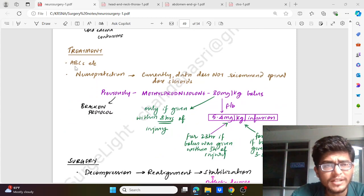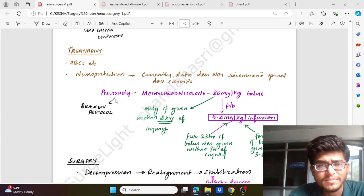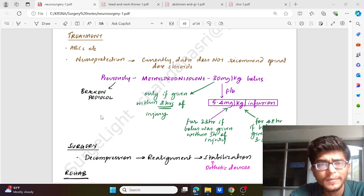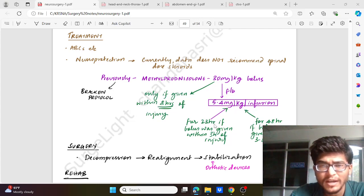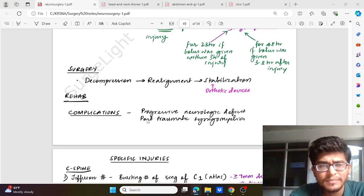Now coming to the treatment: initially we will take care of the airway, breathing, and circulation. Then we will go for neuroprotection, which is generally not recommended nowadays. Previously it was used as per Bracken's protocol where we use methylprednisolone of around 30 mg per kg, especially within the initial eight hours of injury, followed by 5.4 mg per kg as infusion for 23 hours, especially if the bolus was given within three hours of injury, or for 48 hours if it was given in three to eight hours of injury. Then for surgery, we go for decompression, realignment, and stabilization with help of orthotic devices. Rehabilitation - complications like progressive neurological deficit or post-traumatic syringomyelia are some of the complications.